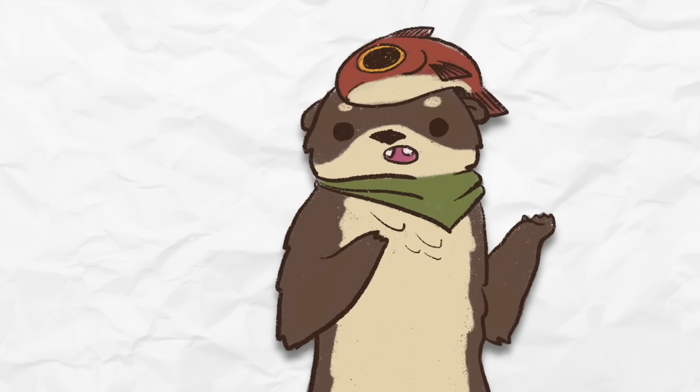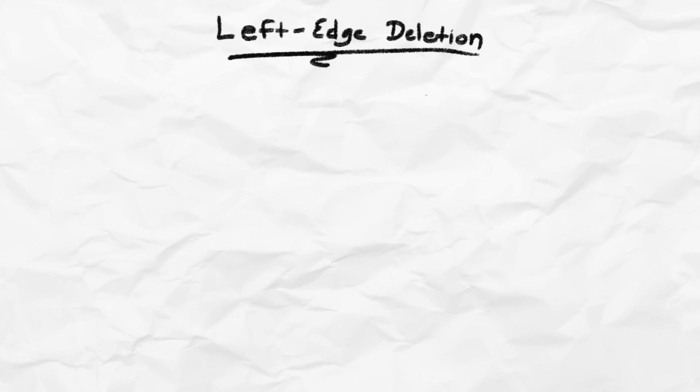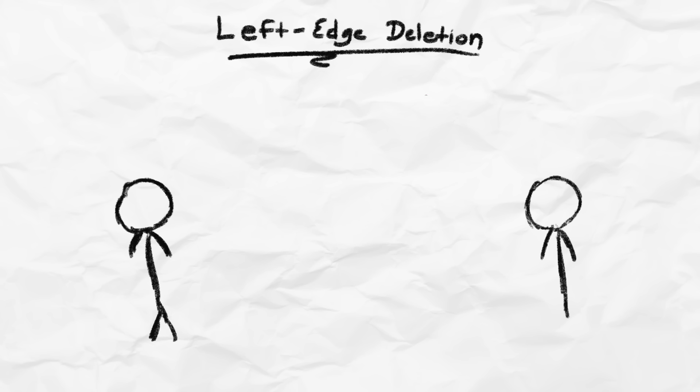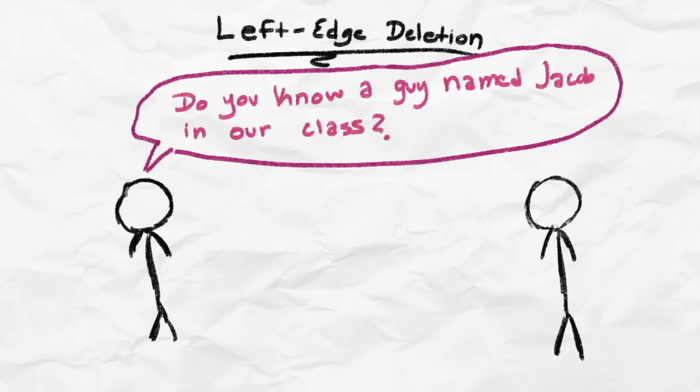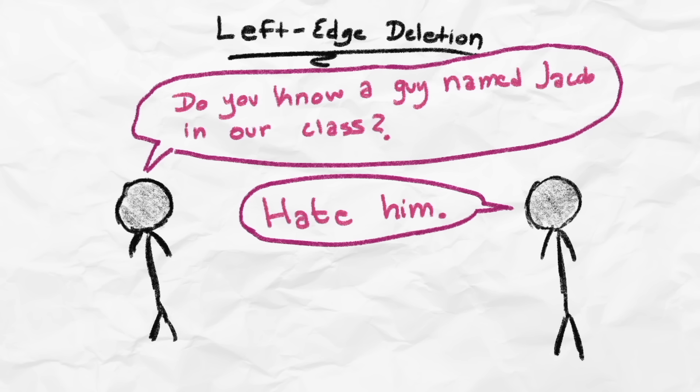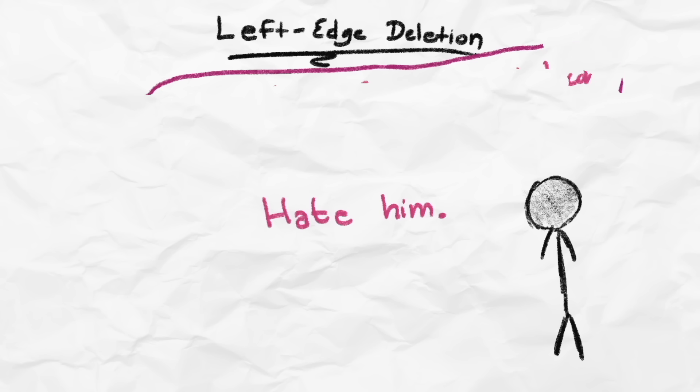Well, English is starting to do a similar dropping of words from sentences based on the context, but it does it a bit differently. For example, imagine a scenario of two people talking. One asks the other, do you know a guy named Jacob in our class? Then, the other person quickly replies with, hate him. Now, traditionally, a sentence without a subject would suggest that this is a command, but that's not how it's being used here. The speaker skips using the pronoun I here because it's already obvious from the context.